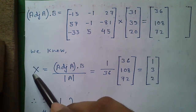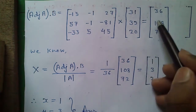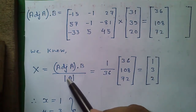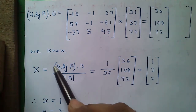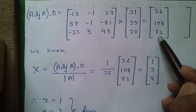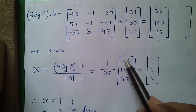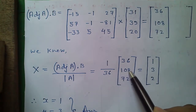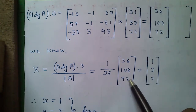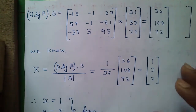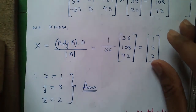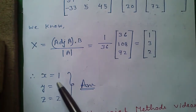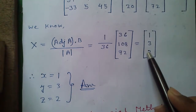We know that X (our unknown matrix) equals adjoint(A)×B divided by the determinant of A. Our determinant was 36, so dividing: 36÷36 = 1, 108÷36 = 3, 72÷36 = 2. Therefore X = 1, Y = 3, Z = 2 is our required answer.